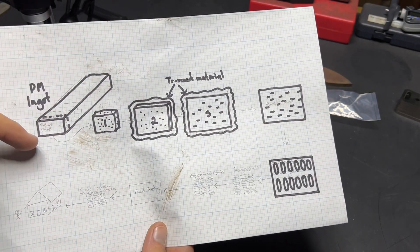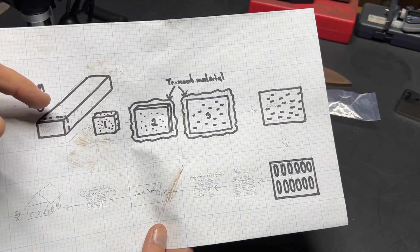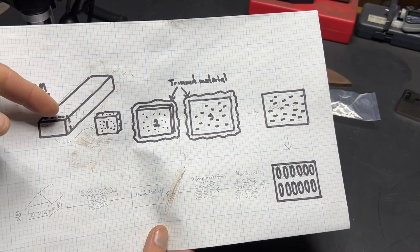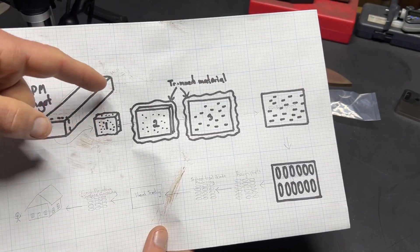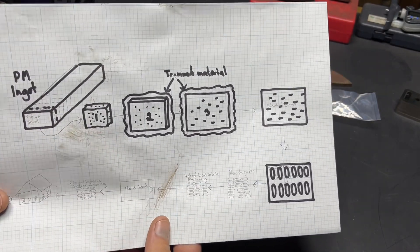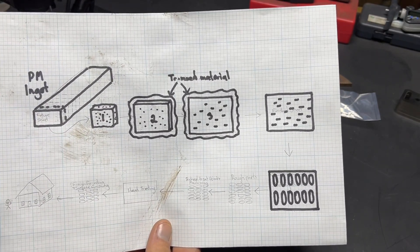The PM ingot starts off as a larger bar and what ends up being sheets are cut off in chunks. You can see this in a Niagara Specialty Metals tour video I did a bunch of years ago if you go way down on our YouTube.